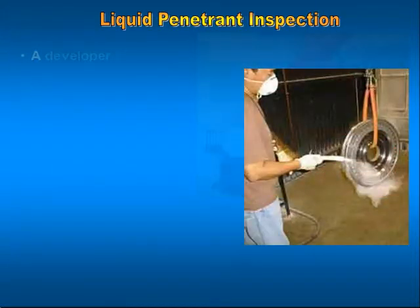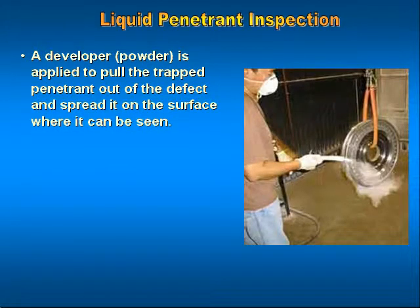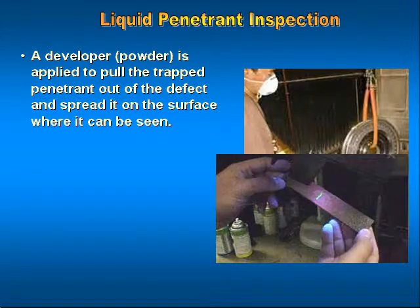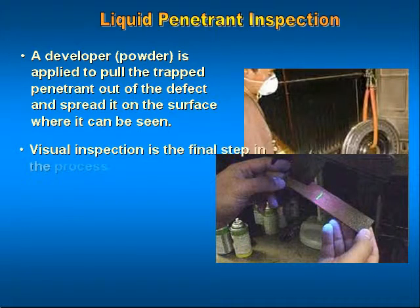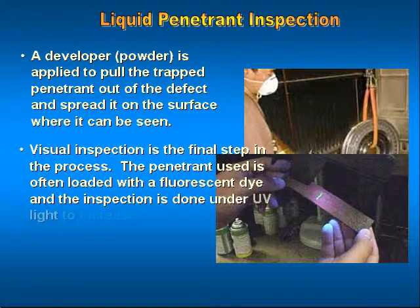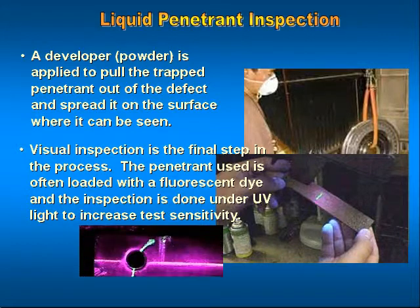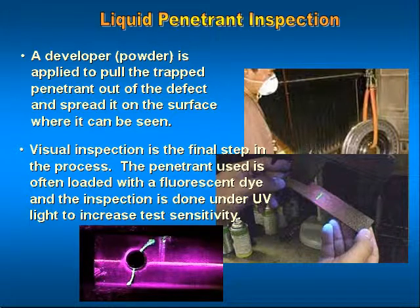Step three: a developer is applied to pull the trapped penetrant out of the defect and spread it on the surface where it can be seen. Step four: visual inspection is the final step in the process. The penetrant used is often loaded with a fluorescent dye and the inspection is done under UV light to increase test sensitivity.